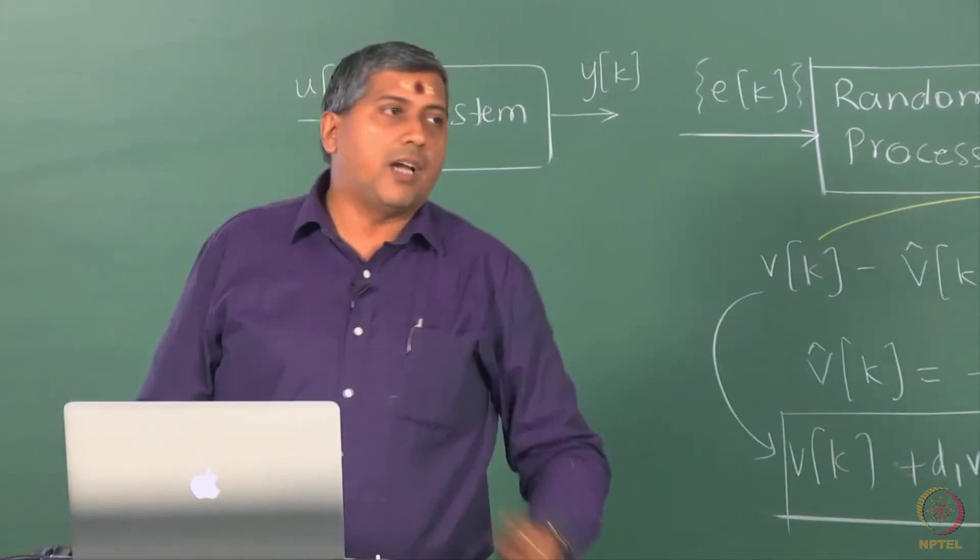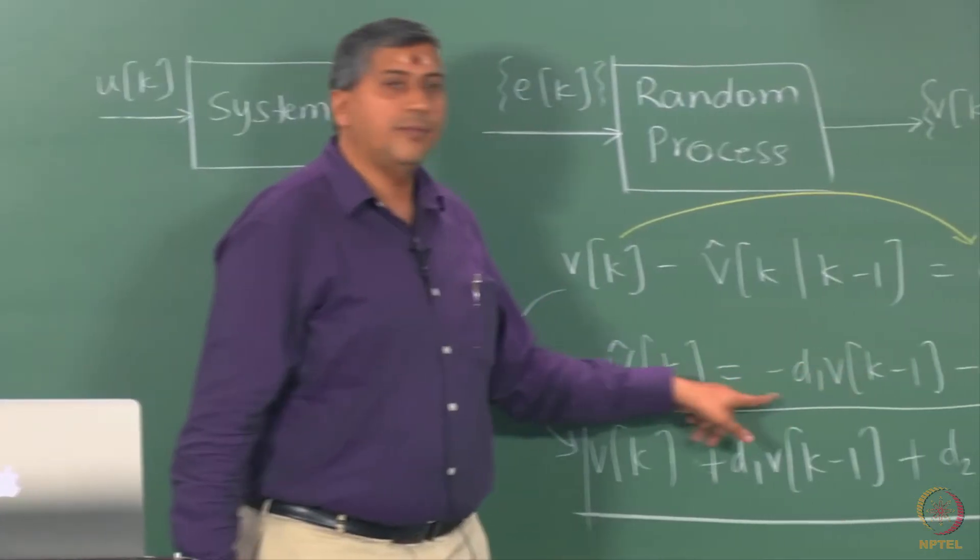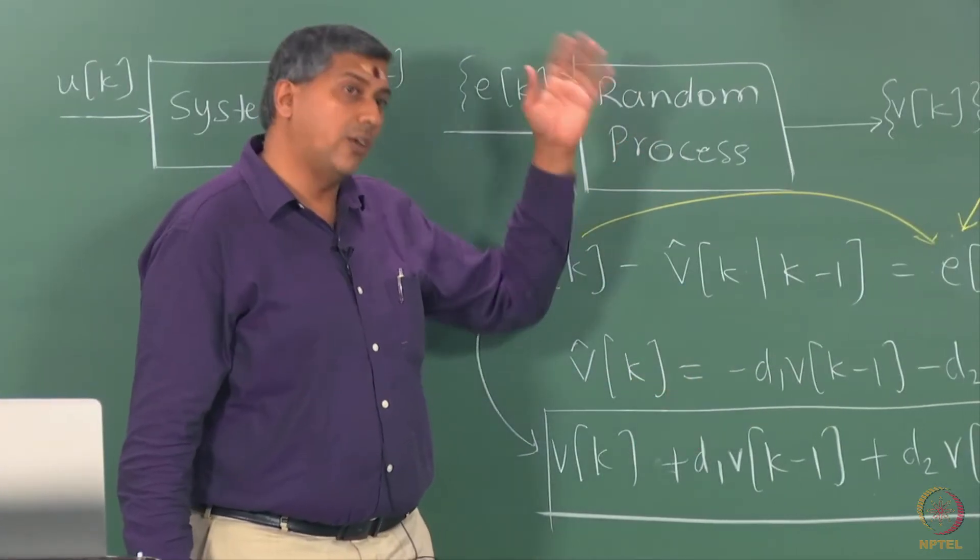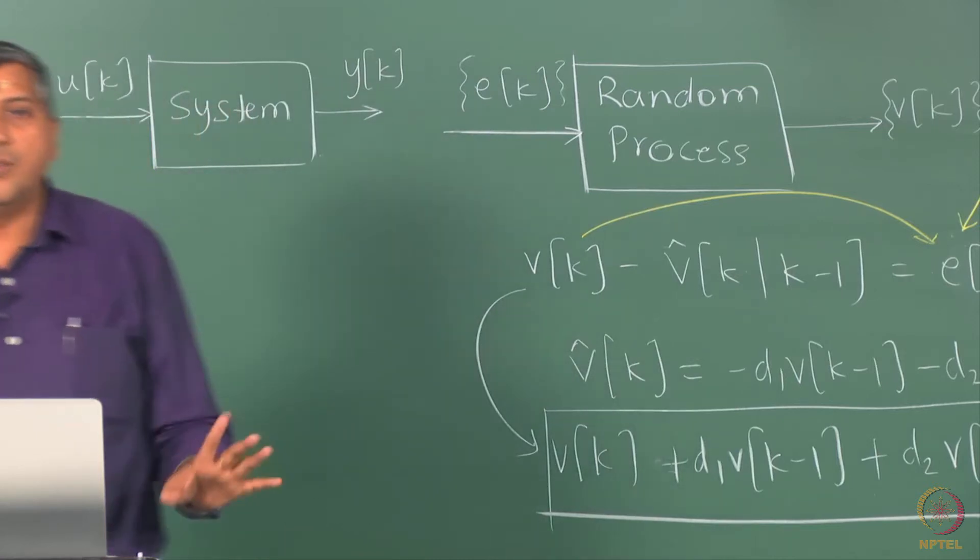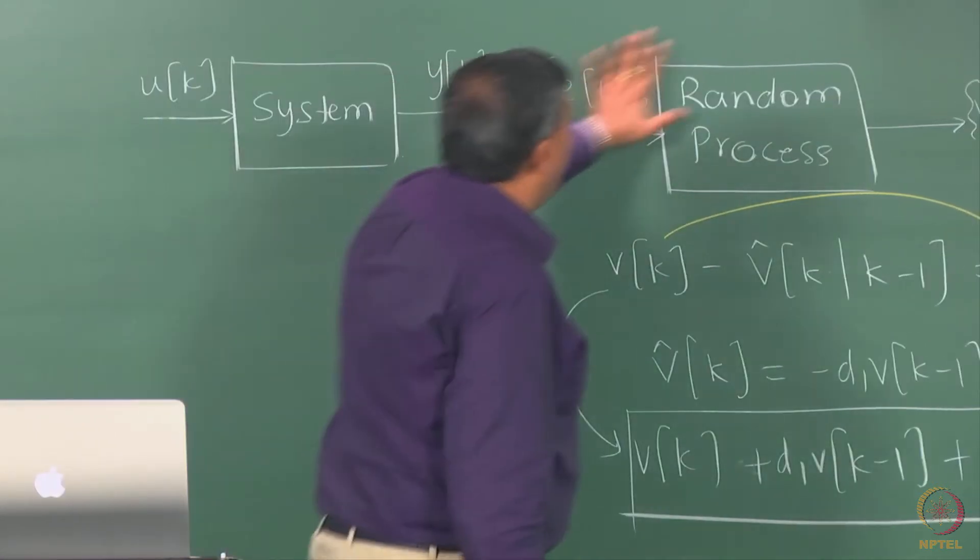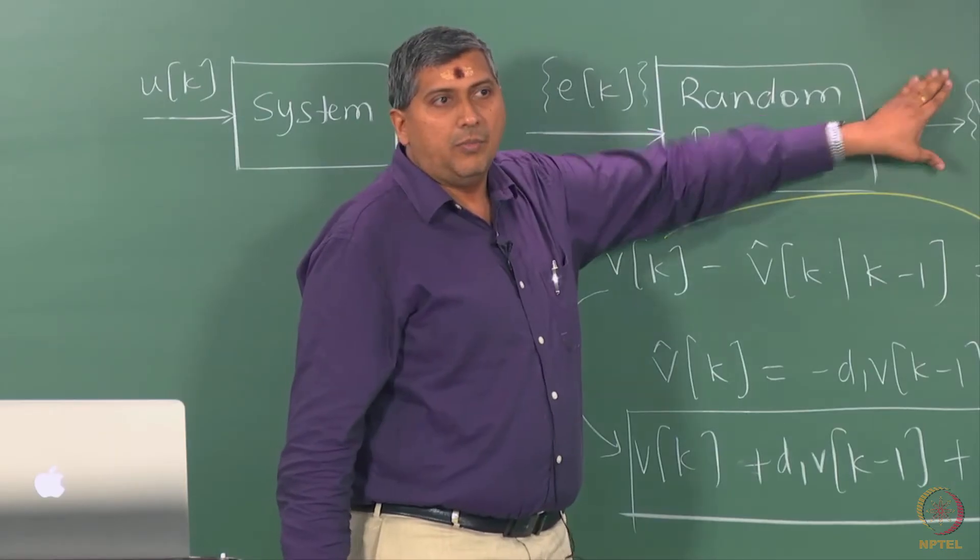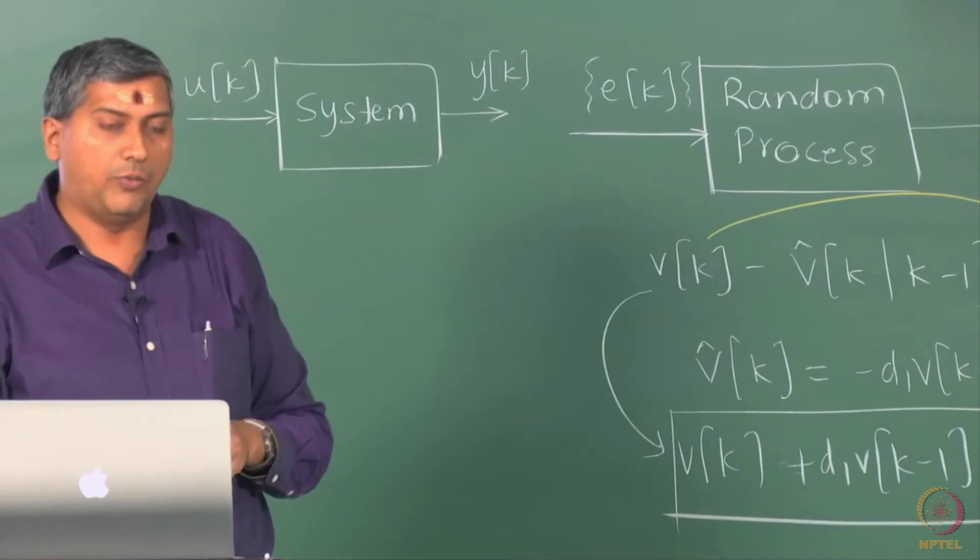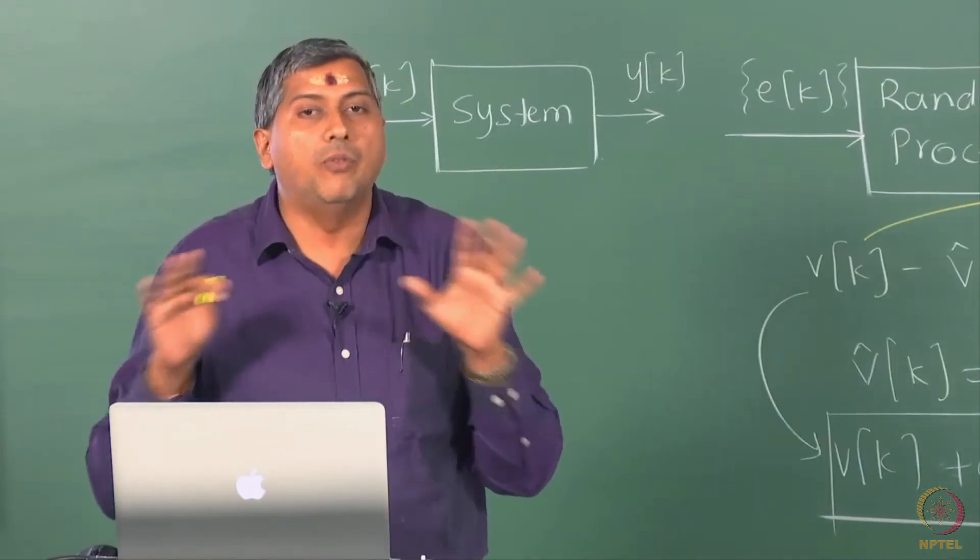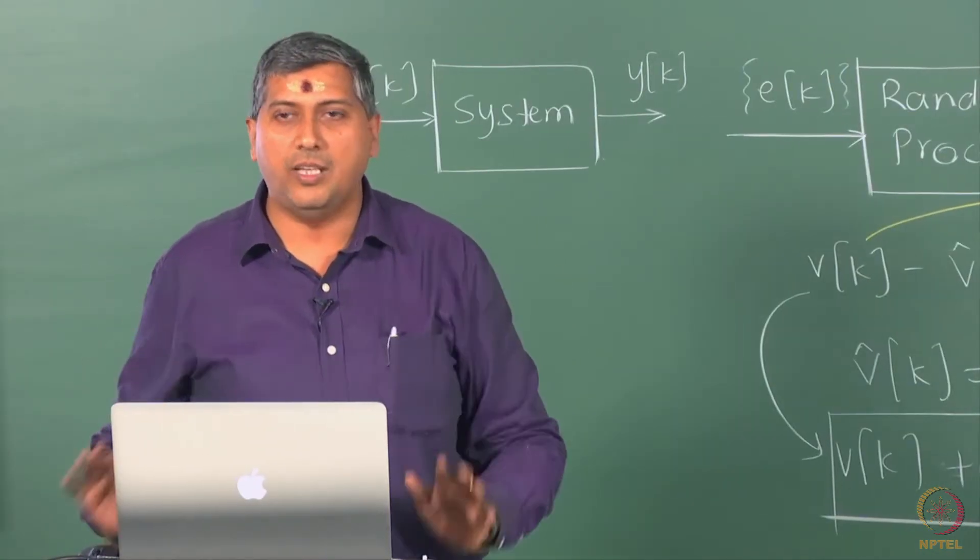However, while Wiener started off with this kind of forecast and Kolmogorov started off with a different kind of forecast expression, both of them converged to this kind of a setup. You can say either Wiener or Wiener school of thought or Kolmogorov or Kolmogorov school of thought, both of them converged to the same setup that you see on the board.